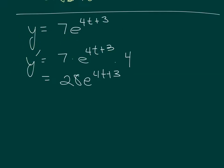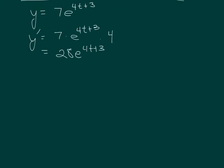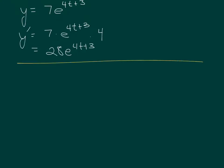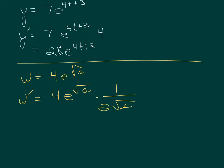If I have something like w equals 4e to the square root of s — 4 is a constant and goes out front. The derivative of e to the anything is e to the anything times the derivative of the anything, and that's my square root. I can make this look a little better, so I get a final answer of 2e to the square root of s, all over the square root of s.